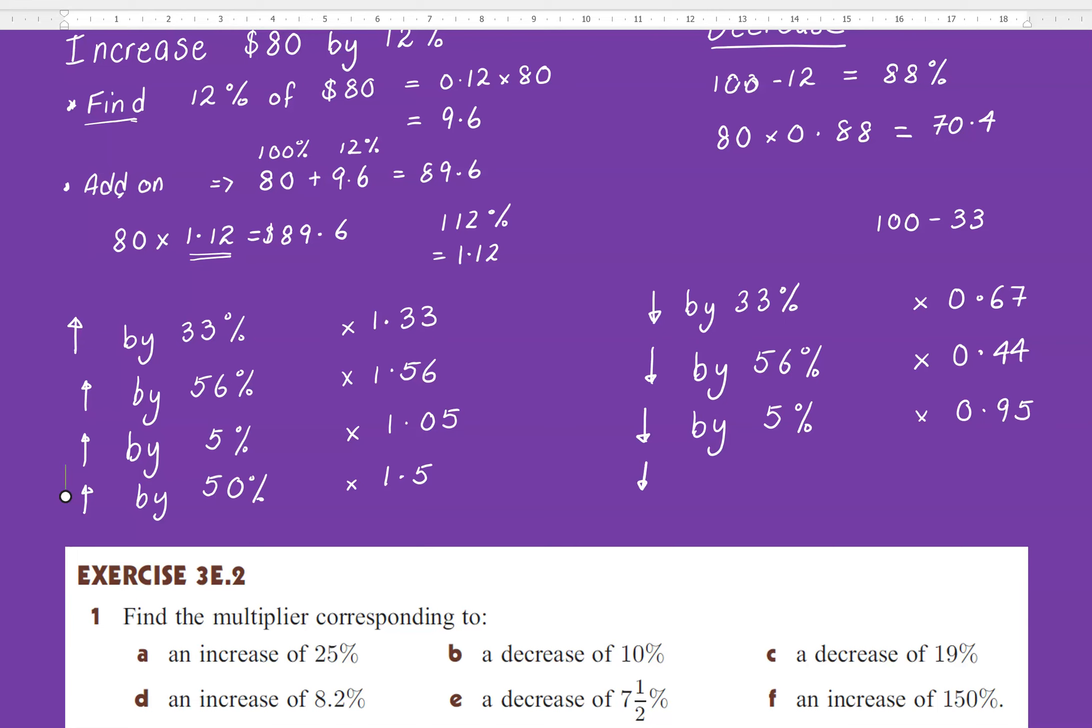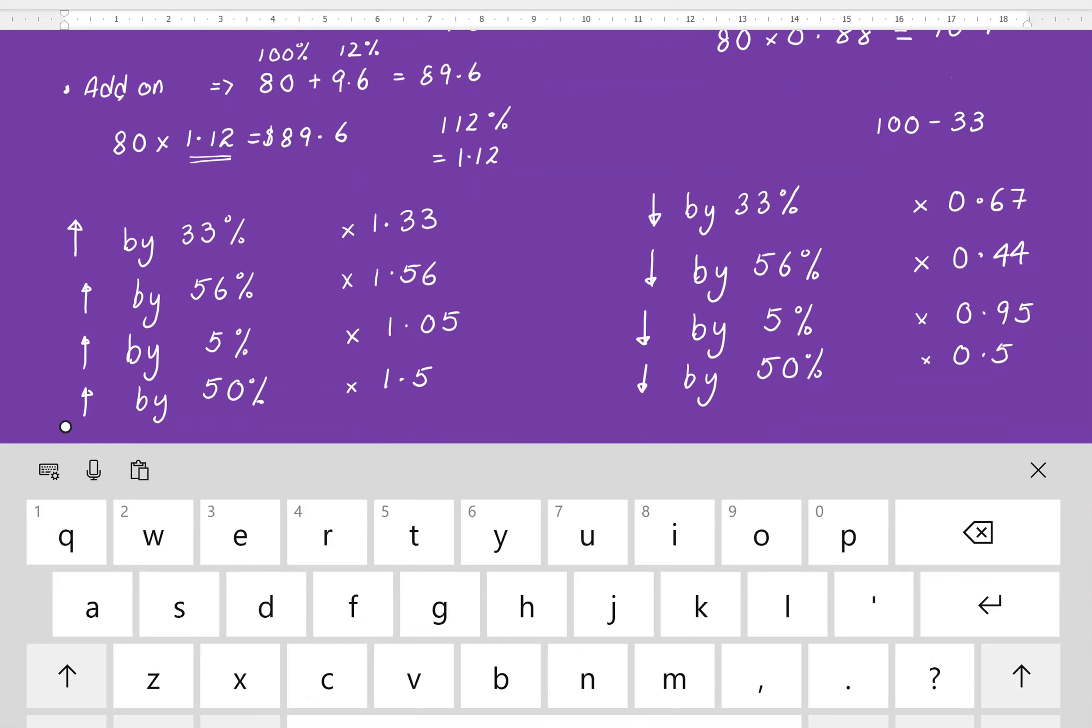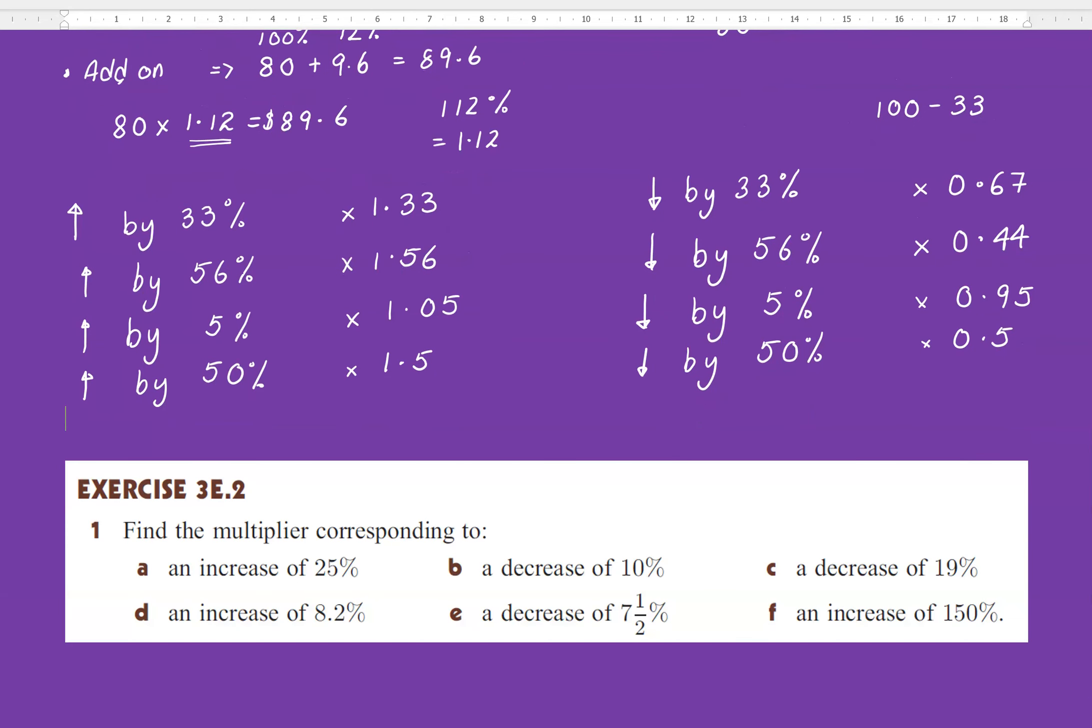And we might as well, decrease by 50%. Instead of timesing by 1.5, this is 0.5. How about we go with B? Let's say if I am multiplying by 0.2. What does that mean? It means that I'm decreasing by 80%. So these are your multipliers.